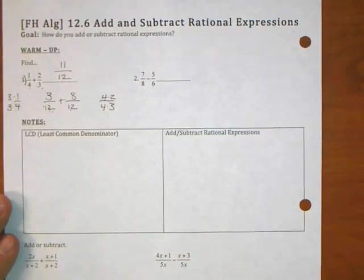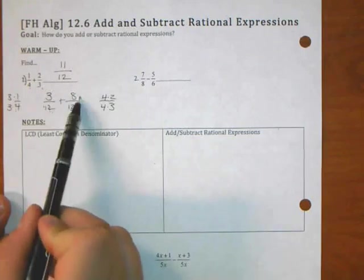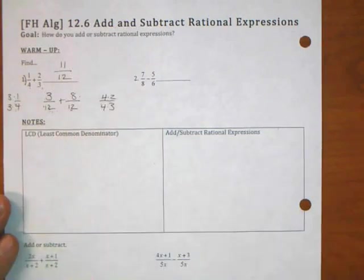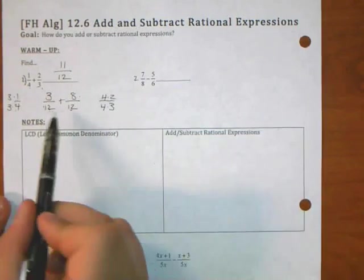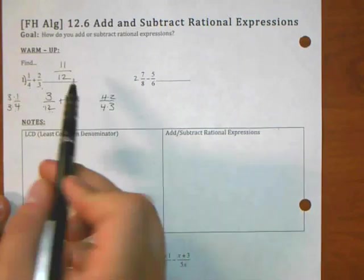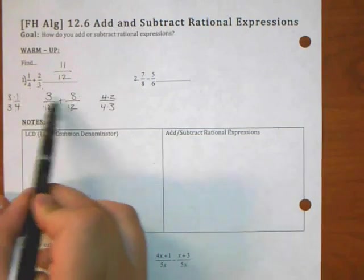So this really is three twelfths plus eight twelfths, which is eleven over twelve. Once the denominators are the same, then the answer has the same denominator, and we add the numerators, or subtract if we need to. Get the denominators to be the same, make one fraction, and add across the top.